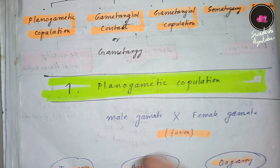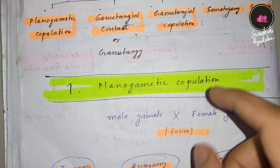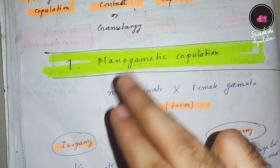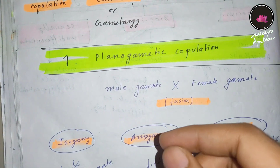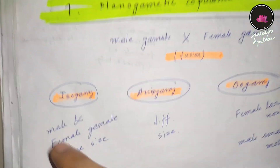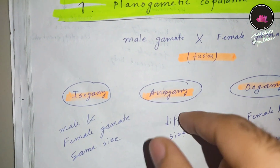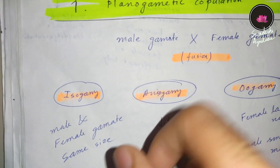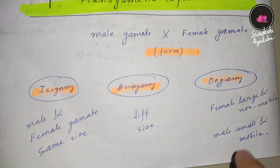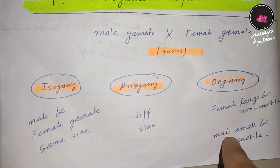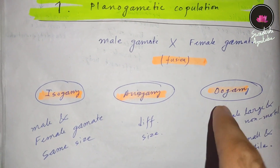Planogametic copulation is very simple — the male gamete and female gamete get fused. There are three types of planogametic copulation based on gamete size. When the size of male and female gametes is the same, that is called isogamy. When they are not the same size, that is called anisogamy. When the female gamete is larger and non-motile but the male gamete is small and motile, that planogametic copulation is named oogamy.